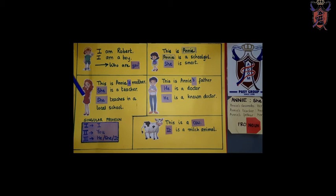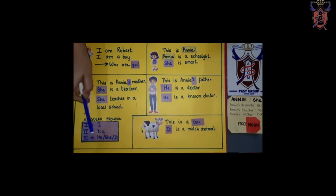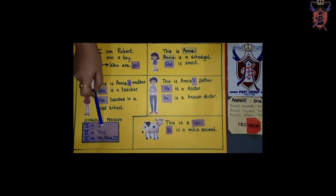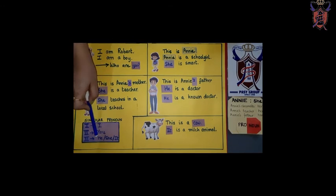So, agar ham eek pronoun ki baat korn hai? Yarni, eek kisii insan ke baare mein, first person is I. Second person is you. Third person korn hai? He, she, ya it. Sab se pahla mein, uske baad tum, uske baad wo.